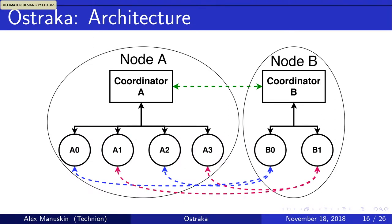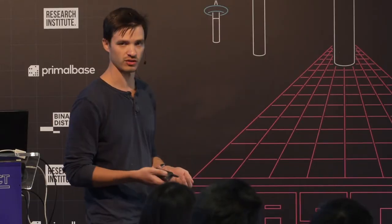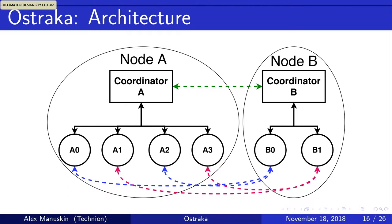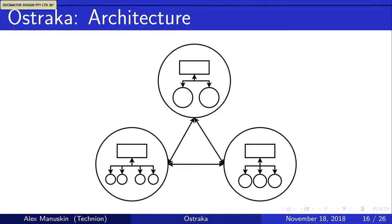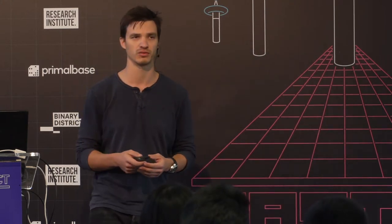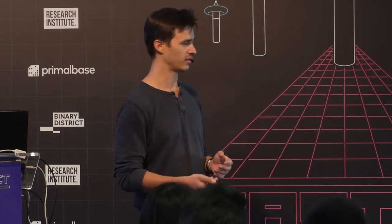When two nodes connect — say node B has just joined the network — coordinator B talks to coordinator A, they exchange information, understand who each other's shards are, and the shards can then connect to each other. The number of shards in each node doesn't have to be the same, as long as they know exactly who to talk to. In the whole network you can be connected to more than one node, and we can run gossip protocols.